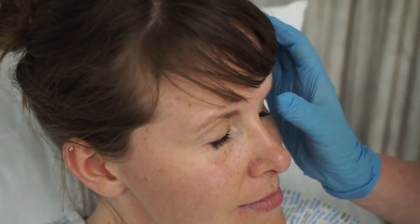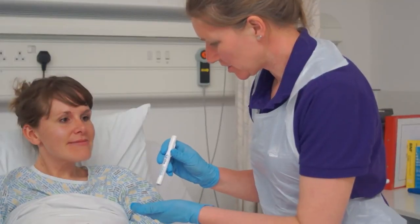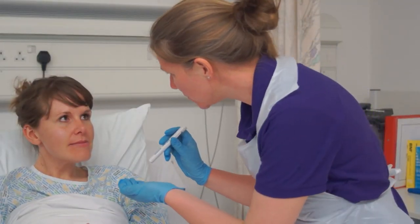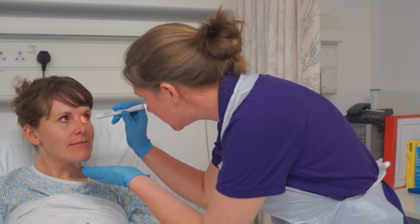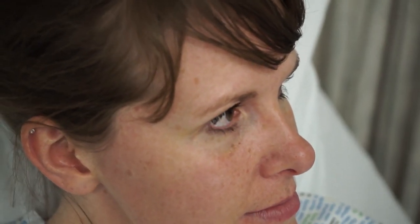Look for signs that the eyes are closing properly. An inability to close completely could indicate the presence of a cyst or lump that would require further investigation and reporting to the patient's doctor. Ask the patient to open their eyes and, using a pen torch, look for abnormalities in the conjunctiva such as inflammation, redness, or the presence of a discharge. The eye should be clear of clouding and redness. Document and report any abnormalities to the patient's doctor immediately, as eye complications can develop quickly.